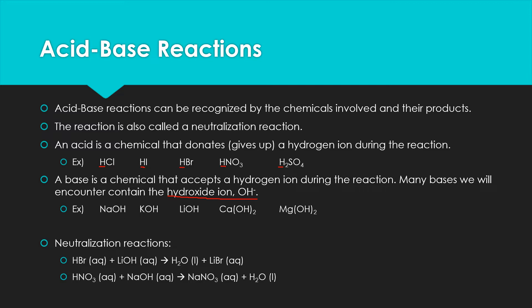To create a neutralization reaction, we pair one of these acids with one of these bases. For example, HBr is our acid and lithium hydroxide is our base. The acid gives up the hydrogen ion and the base accepts it — the hydrogen and the hydroxide come together to form water, which is neutral. The remaining lithium and bromine create an ionic compound, also called a salt — in this case lithium bromide, which is aqueous.